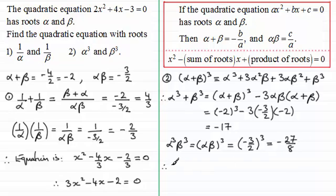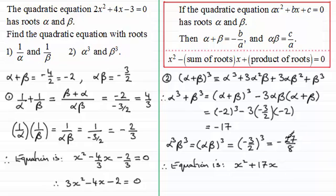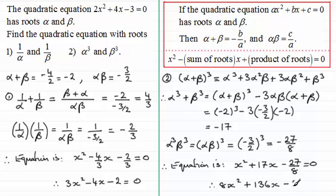We now have everything needed to write the equation: x squared minus the sum of the roots, which is minus minus 17 giving plus 17x, plus the product of the roots which is minus 27 over 8, equals zero. Multiplying through by 8 gives 8x squared plus 136x minus 27 equals zero. I hope that gives you a clear idea of how to approach these types of problems.